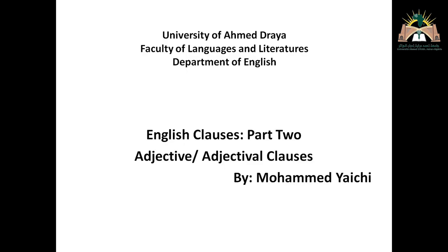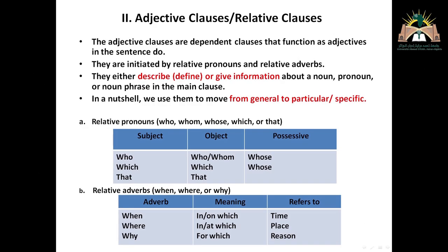We move to number two, or B: adjective clauses. Like the noun clauses, adjective clauses are dependent clauses. We have seen this in a chart earlier, that both of them are subordinating or dependent clauses. But in matter of function, here lies the difference: noun clauses function as nouns do, but adjective clauses function as adjectives in sentences do.